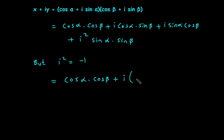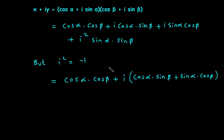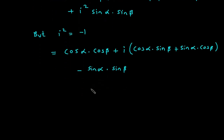This gives us cos alpha into cos beta, then plus i in bracket cos alpha into sin beta, then plus sin alpha into cos beta, then minus sin alpha into sin beta. So this is our real part and this is our imaginary part.